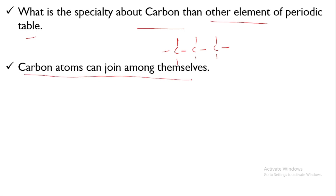Carbon atoms can join with each other — this is the catenation property. Carbon can also combine with simple elements like hydrogen, oxygen, sulfur, chlorine, and others to form hydrocarbons. This is why there are more than 30 lakh (3 million) carbon compounds. Carbon is a very special element.